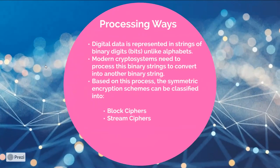We have already discussed that whenever you present data in strings of binary digits, which you call bits, unlike alphabets, modern crypto systems need to process some ways to convert that binary string to another binary string. Basically, you have to do this conversion in communication when you want to make the communication secure. Based on this process, systematic encryption schemes can be classified into two types.